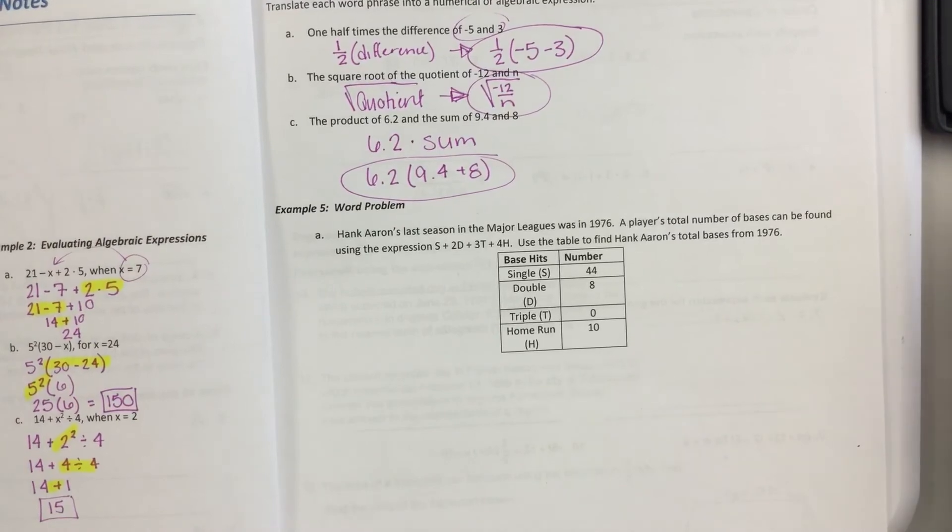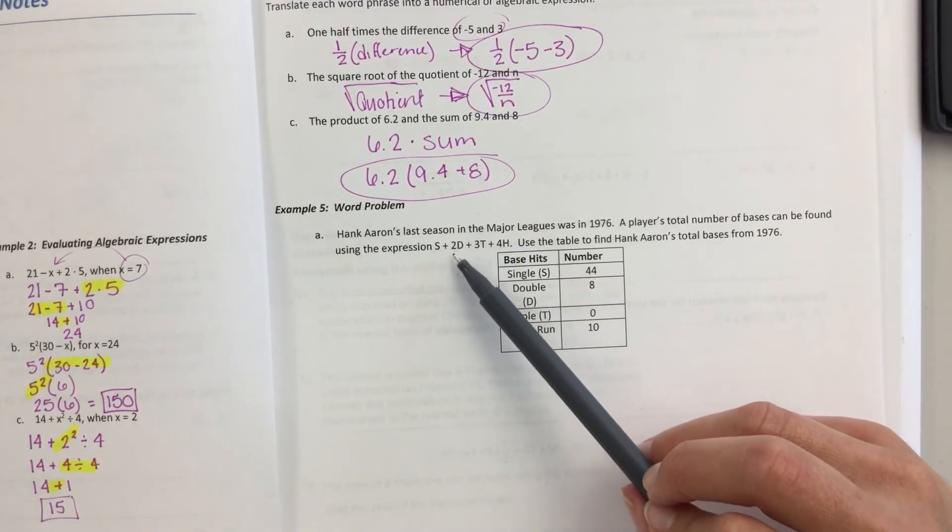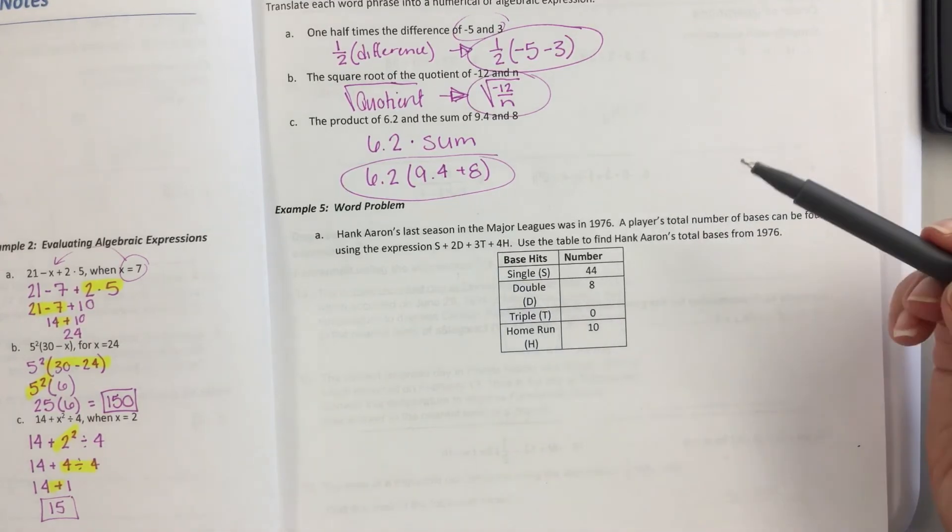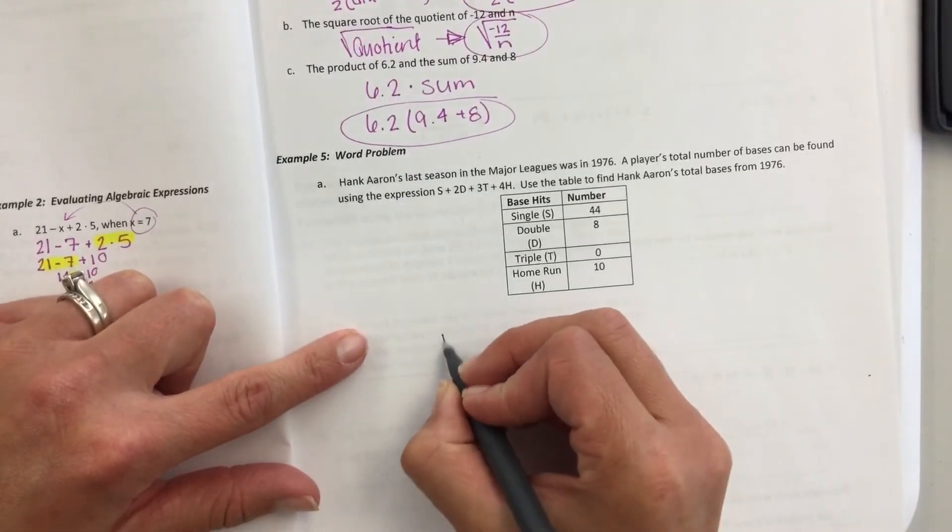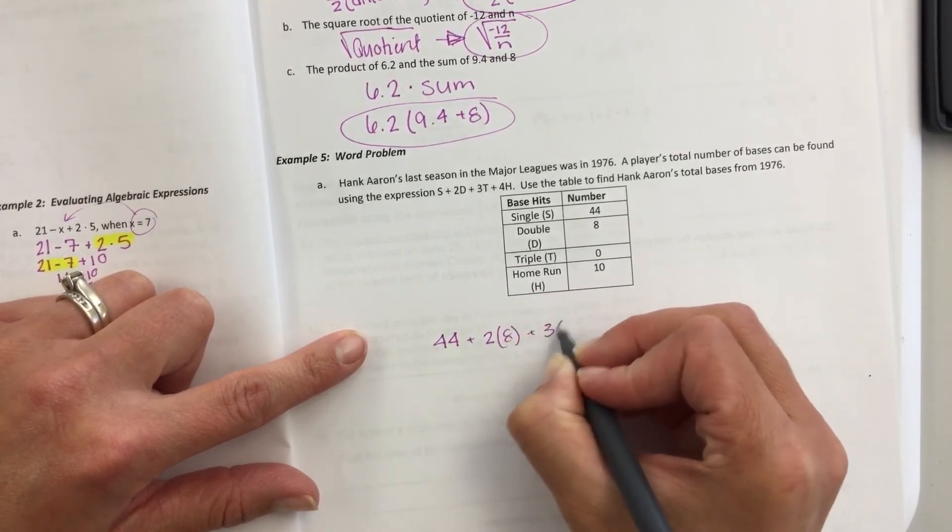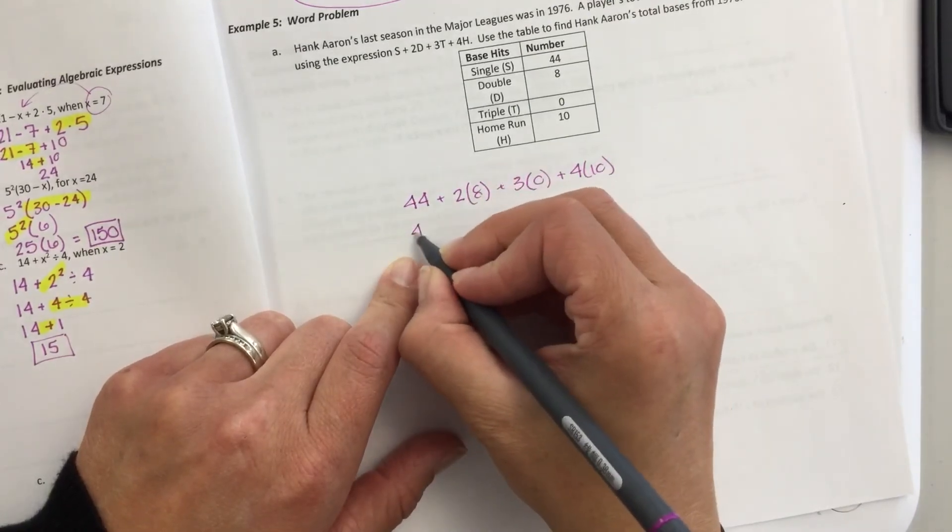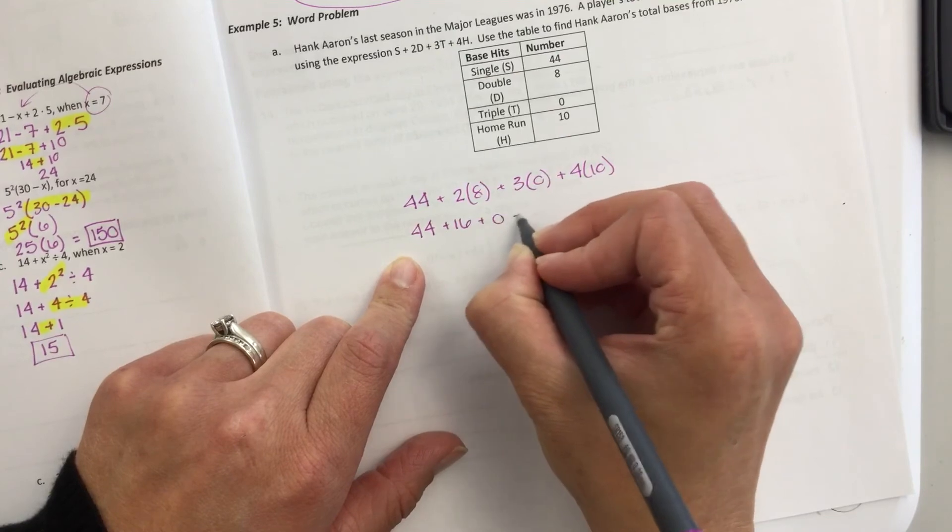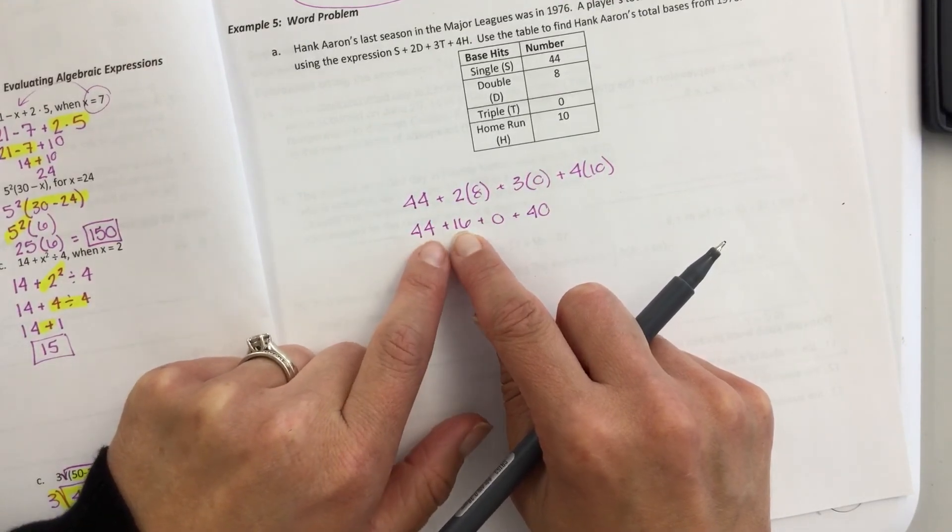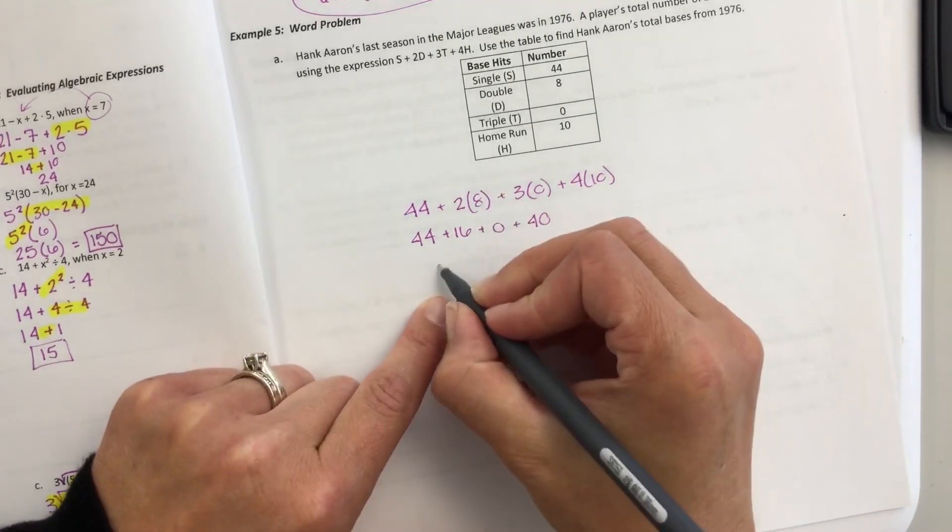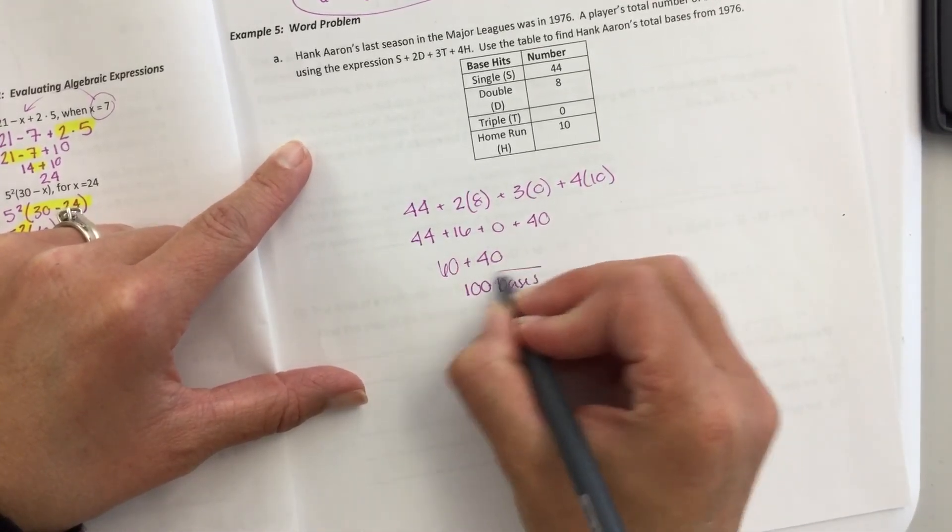The last little thing here. It says Hank Aaron's last season in the major leagues was in 1976. A player's total number of bases can be found using this expression. Singles plus 2 times the doubles plus 3 times the triples plus 4 times the home runs. Use this table to find Hank Aaron's total number of bases from 1976. Singles, doubles, triples, home runs. So this is just like evaluating it in a big problem. The doubles, he had 8. The tripled, he had 0. And the home runs, he had 10. And then order of operations tells us multiplication, then addition. 3 times 0 is 0. 4 times 10 is 40. And then I like to group things together. So for example, I would group those two together. Because 4 and 6 gives me a 10. So this would be 50, 60 plus 40. And I would get 100. And then we're trying total bases. So 100 bases would be the final answer.